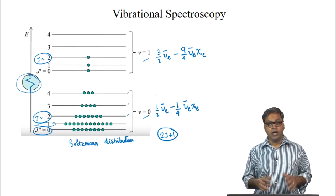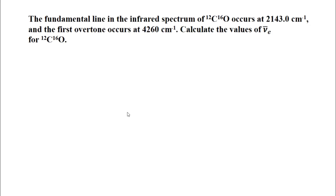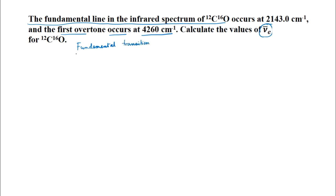We will end this lecture by solving a few problems. The first question: the fundamental line in the infrared spectrum of carbon monoxide occurs at 2143.0 wavenumbers and the first overtone occurs at 4260 wavenumbers. We have to calculate the values of nu_bar_e and nu_bar_e*chi_e for carbon monoxide. We know the fundamental transition energy in wavenumbers is nu_bar_e minus 2*nu_bar_e*chi_e.